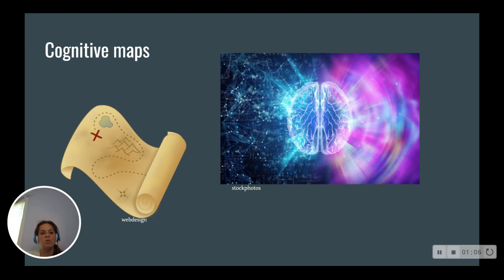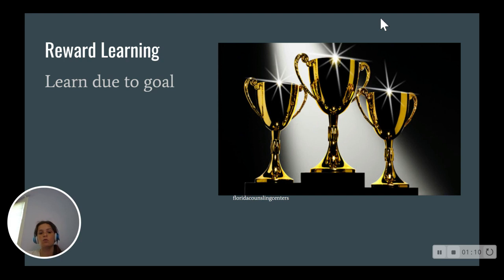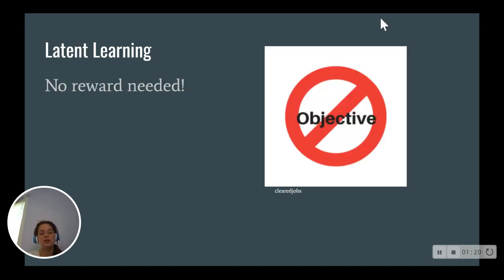So what scientists wanted to know was why are rats forming cognitive maps? Is it reward learning or operant conditioning, that the rats have a goal, there's some incentive, there's a reward at the end, or is it latent learning, which is they're learning for the sake of it? They're active learners, and there is no reward.